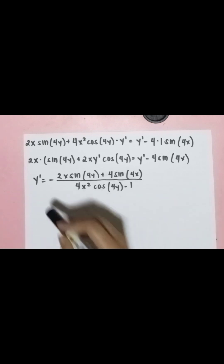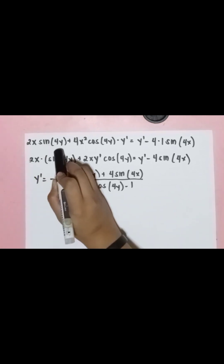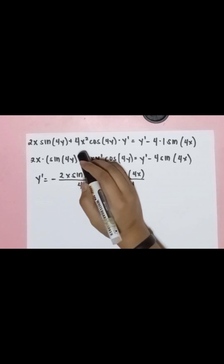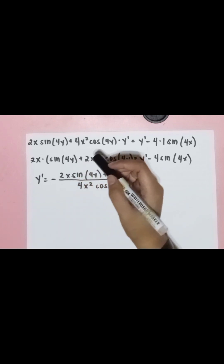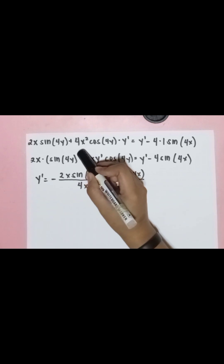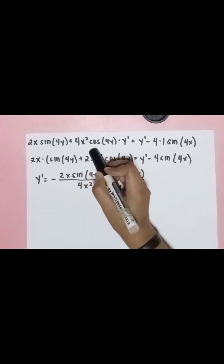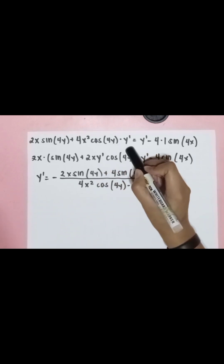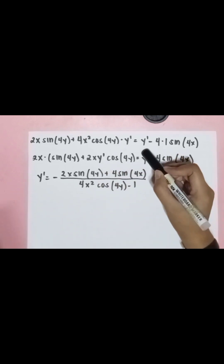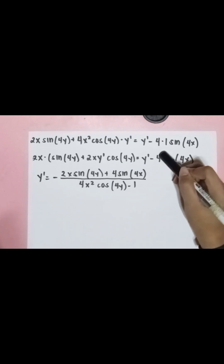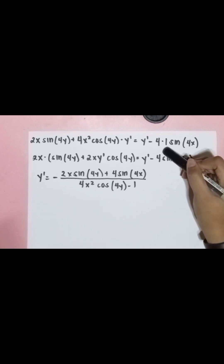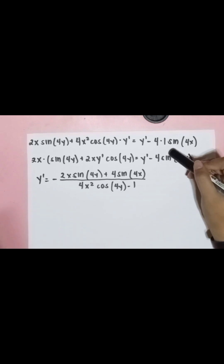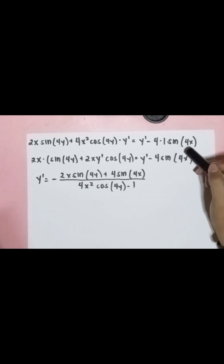Copying again: 2x sine 4y plus multiplying 4 by x squared gives 4x squared cosine 4y times y prime, equals y prime minus 4 times 1 sine 4x. Since the derivative of x is 1.